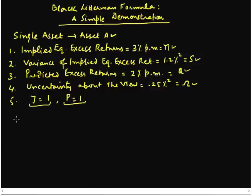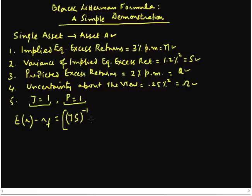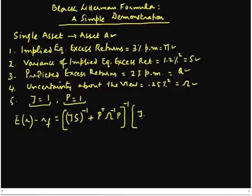Let us now write down the Black-Litterman formula for finding out the excess returns and then plug in our numbers. The first term is: tau times the variance-covariance matrix inverse, plus the transpose of the link matrix times the omega inverse — omega represents the uncertainty about our views — multiplied by the link matrix. We take the inverse of this whole thing, then multiply by the second term, which is basically a weighted average. We write the first weight first: tau times S inverse multiplied by our implied equilibrium excess returns, pi.